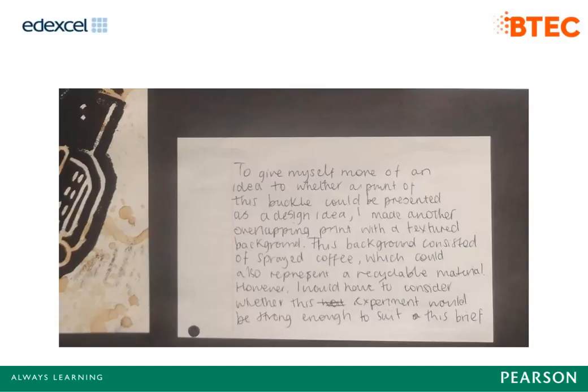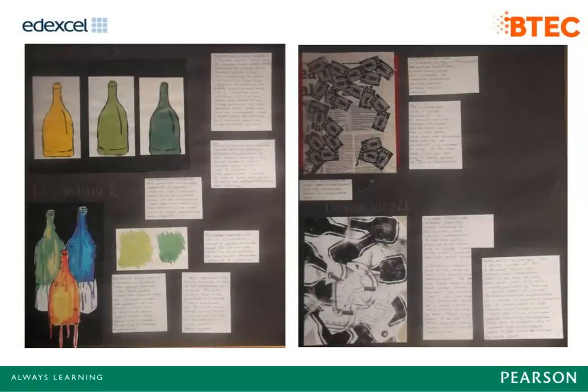Here is the final page. The overall presentation is what is important — a considerable volume of work has been produced. It is well documented and we have design ideas, some of which have been developed. There are reasoned judgements, review and evaluation. The work is certainly diverse, satisfying the majority of the distinction criteria. This work lies just below distinction, since if a criterion is only partially met, the work must be marked in the band below where it will be fully met.